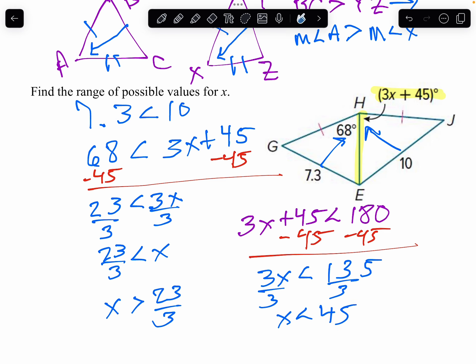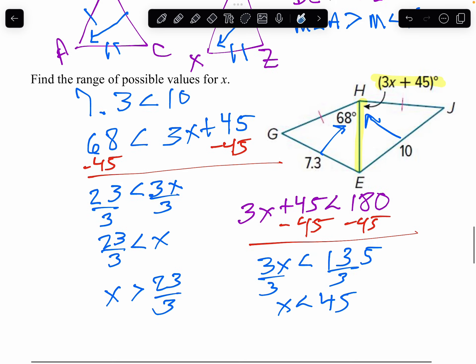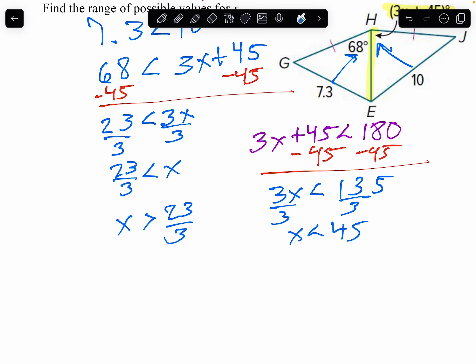So my angle, or X, not my angle, X is between 23 thirds. I always like to write it as one inequality. 23 thirds is less than 45. So I'll say it's less than X, which is less than 45.